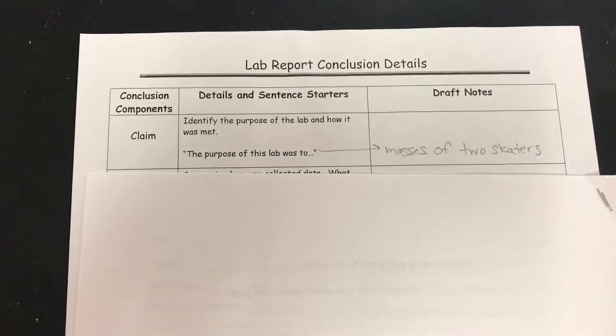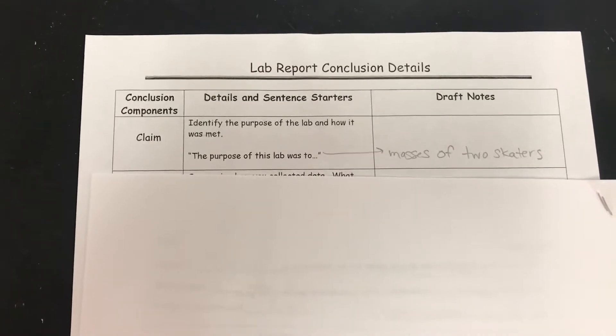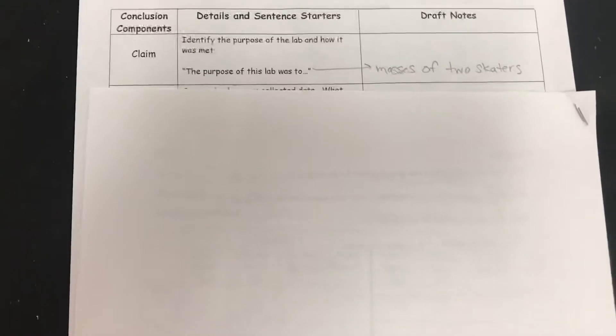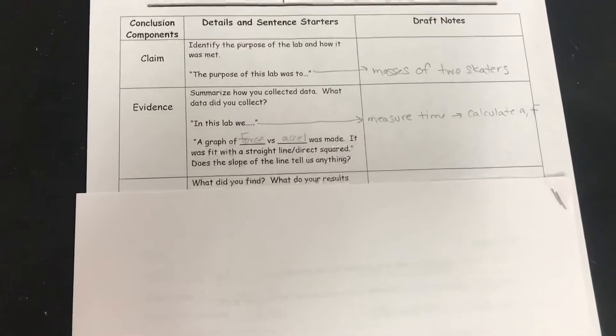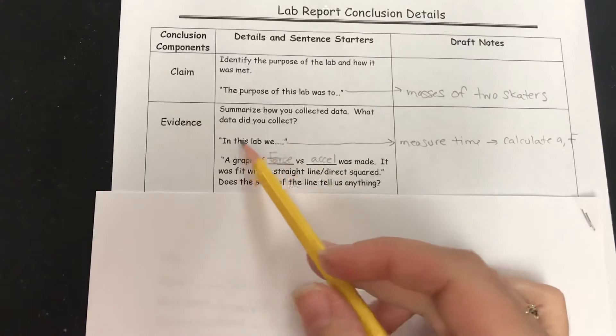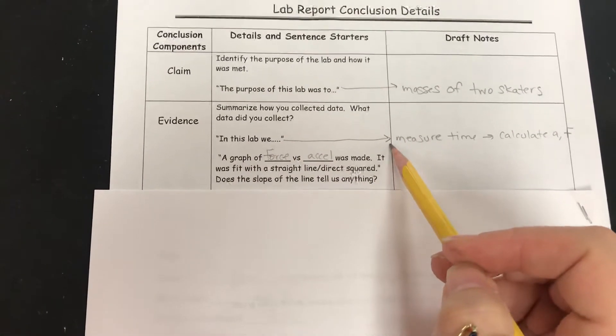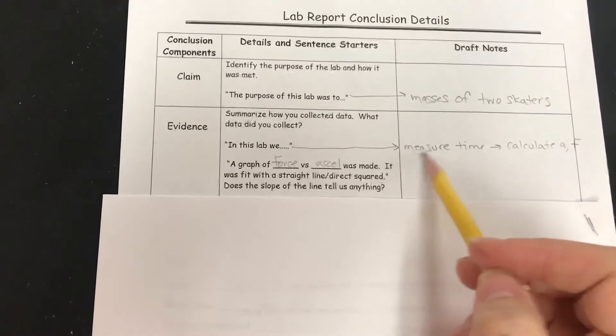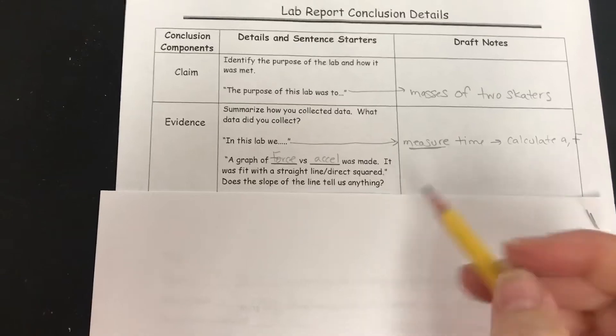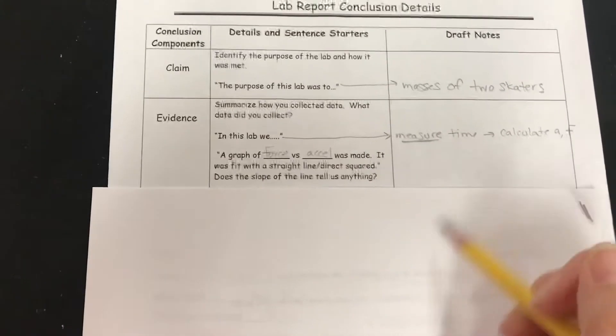In this case, the purpose of the lab was to calculate the masses of the two skaters. So you're going to write something like, the purpose of this lab was to find the masses of two skaters. In the evidence part, we're going to write two sentences. In this lab we, and then I want you to tell me what you did. What specifically did you measure? You did not measure the acceleration. We measured the time and calculated the acceleration and force.